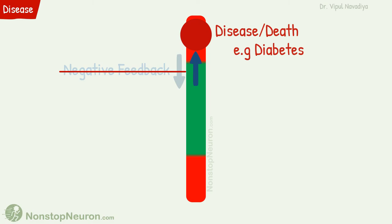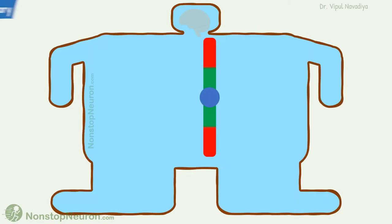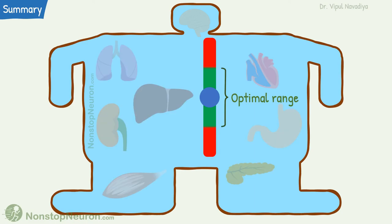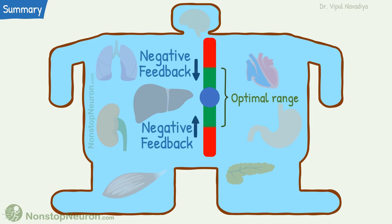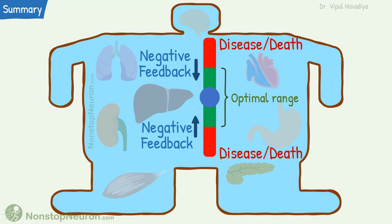So this was about homeostasis. In summary, homeostasis is maintenance of a nearly constant internal environment. All the cells, tissues, organs, and organ systems contribute to homeostasis. The most common mechanism of homeostasis is negative feedback control. Disrupted homeostasis can lead to diseases or death.